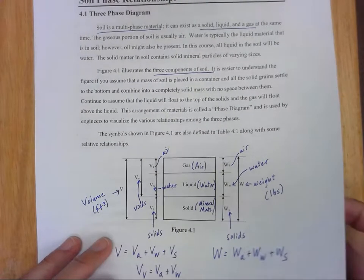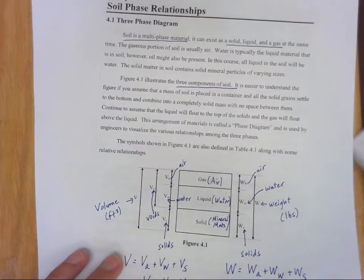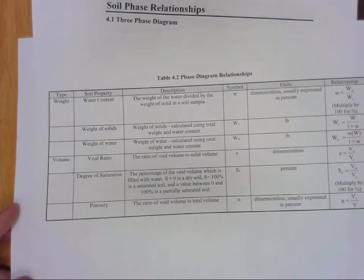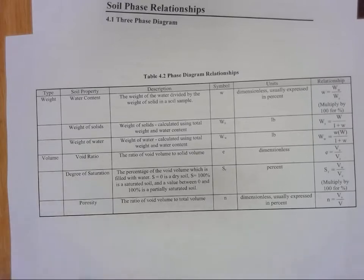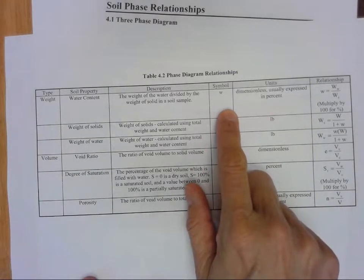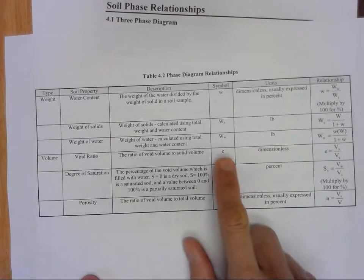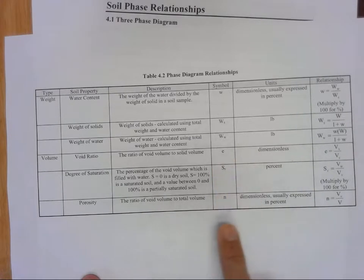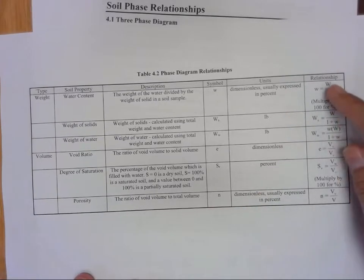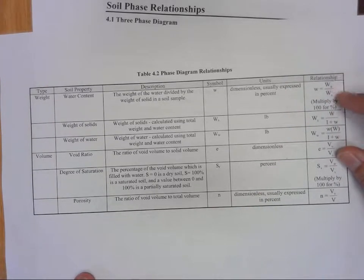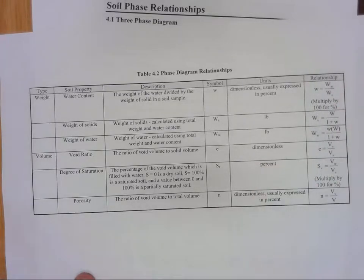And you'll see this big table here that talks about all these phase diagram relationships. You'll see things like water content. We've got a void ratio, E. We have a porosity. And all of these soil properties are based on relationships that we can get from that phase diagram.